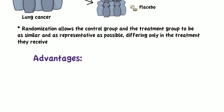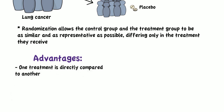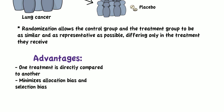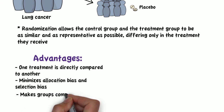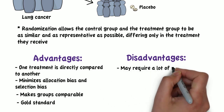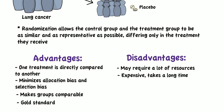The advantages of randomized controlled trials are that one treatment is directly compared to another to establish superiority. Randomization minimizes allocation bias and selection bias, and makes groups comparable by minimizing confounding factors. RCTs are considered the gold standard for research. The disadvantages are that they may require a lot of resources, are often expensive, and usually take a long time. There are also ethical limitations — you cannot ethically randomize patients unless both treatments being compared have equal support in the medical community.